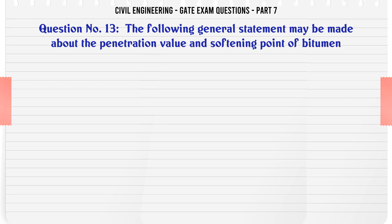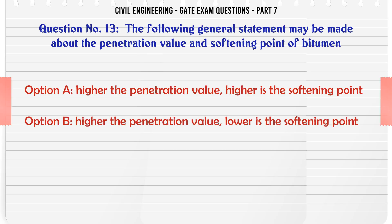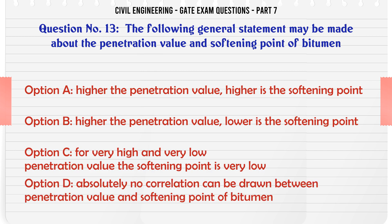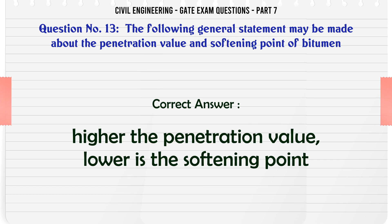The following general statement may be made about the penetration value and softening point of bitumen: A) higher the penetration value, higher is the softening point; B) higher the penetration value, lower is the softening point; C) for very high and very low penetration value the softening point is very low; D) absolutely no correlation can be drawn between penetration value and softening point of bitumen. The correct answer is: higher the penetration value, lower is the softening point.